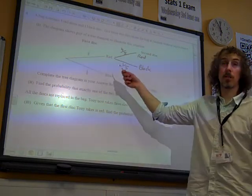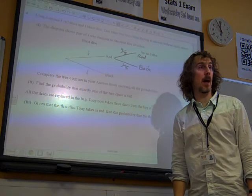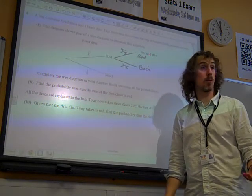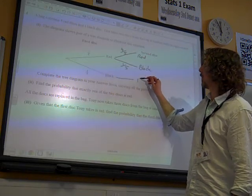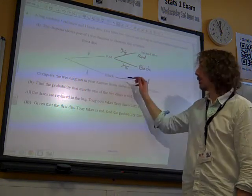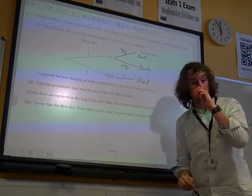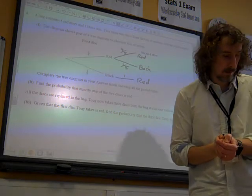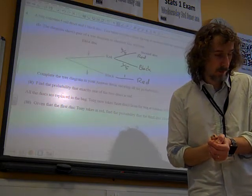But look what happened down here. Once the black disc has been taken out of the bag, there are still five discs left. But they're all red, aren't they? So there's only one option there. It must be red, and the probability of that happening is one. We have to actually write one at that point, not just leave that blank.